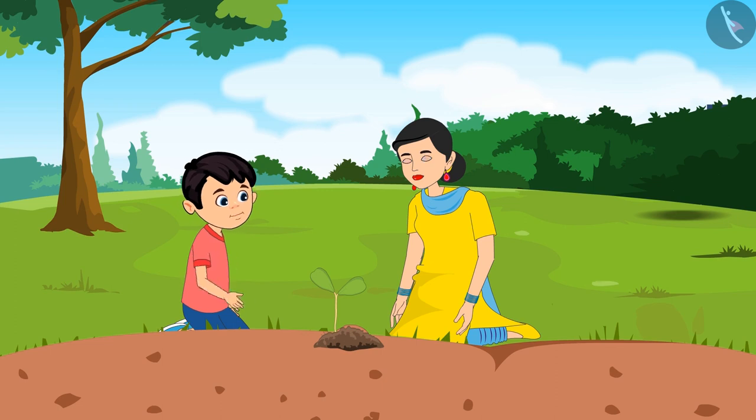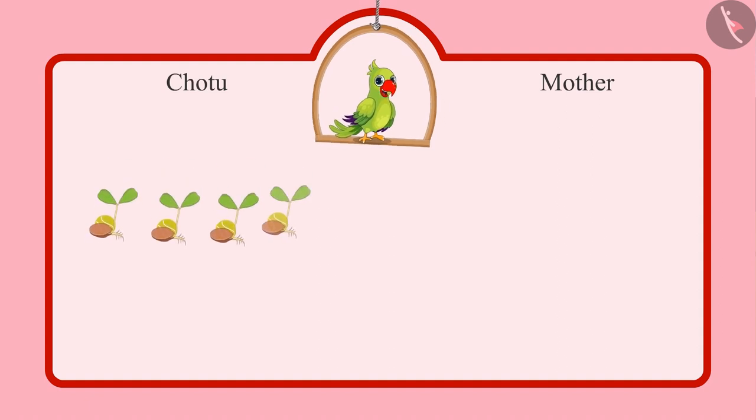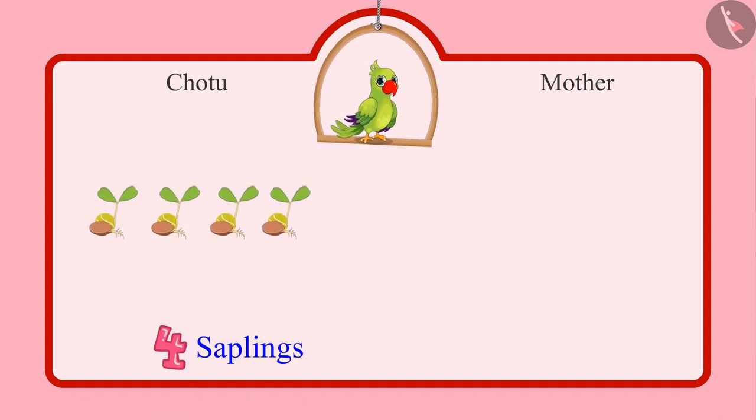Chotu, now you also start planting the saplings carefully. Chotu planted four saplings, mother planted nine saplings.